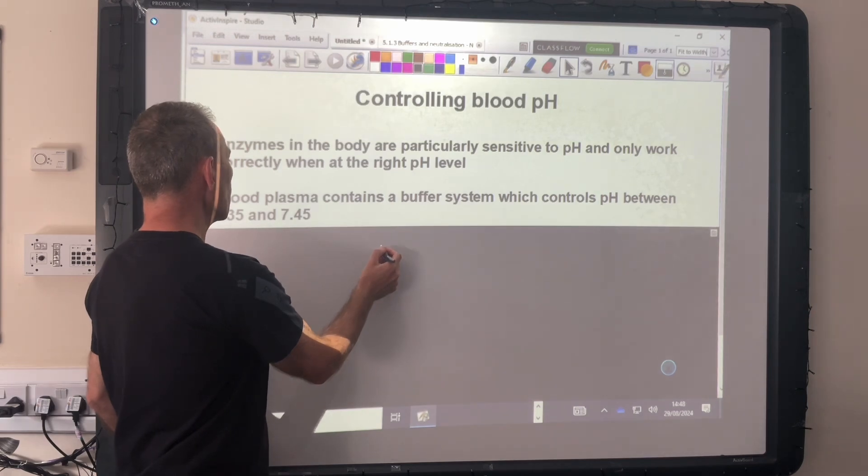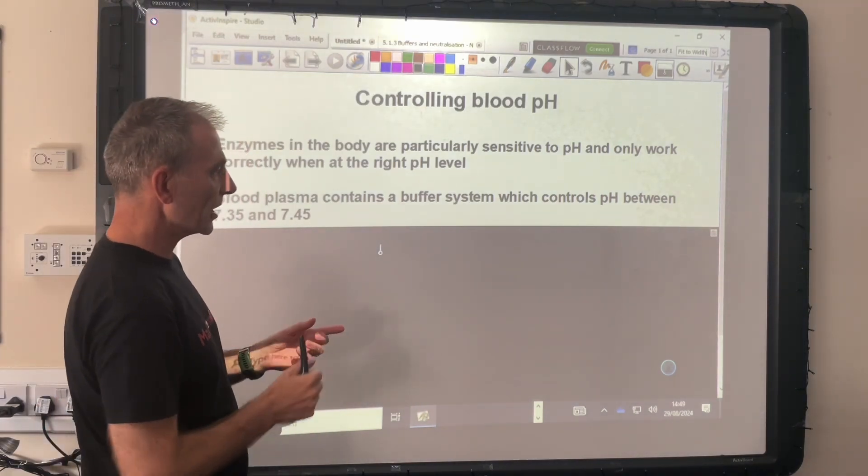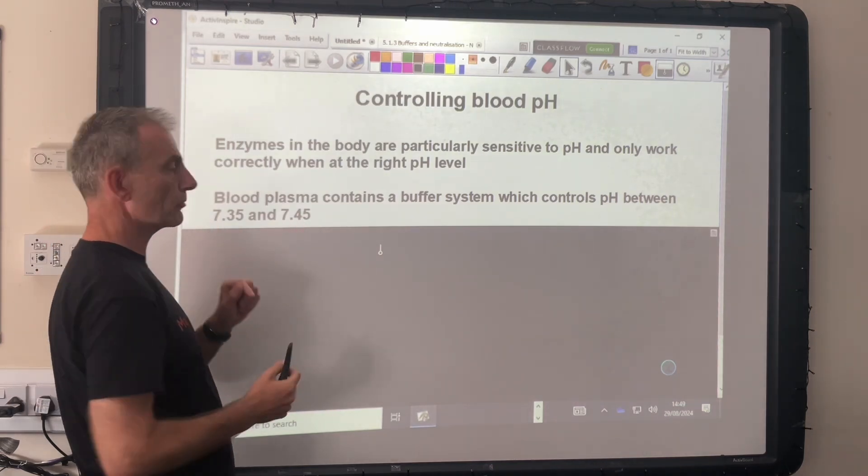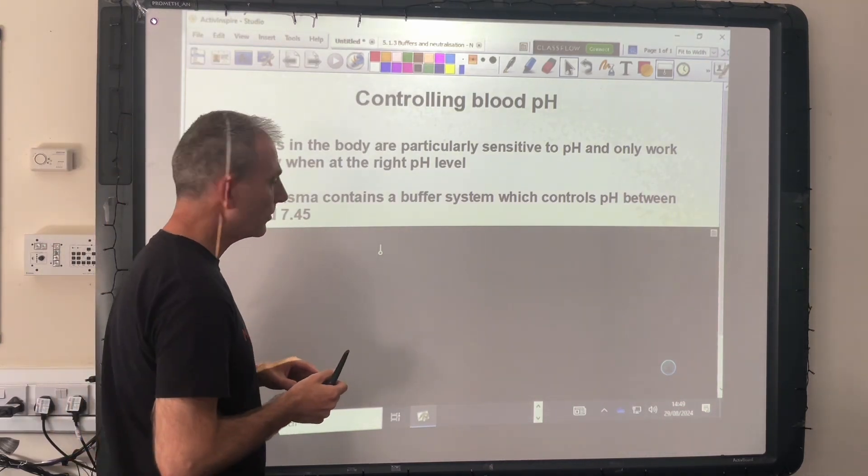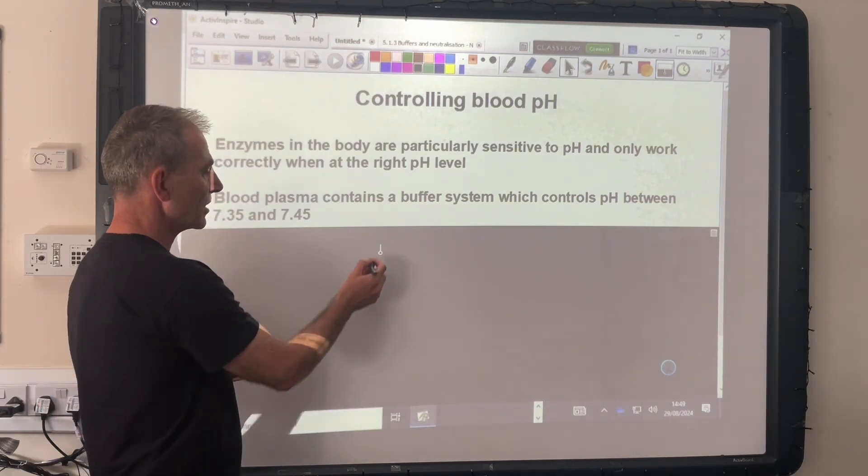Our blood plasma contains a buffer system which controls the pH between this range here, between 7.35 and 7.45, so quite a narrow window it has to be.